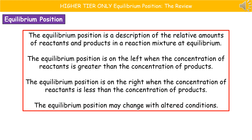For those of you doing the higher tier, you need to know about equilibrium position. The equilibrium position is a description of the relative amounts of reactants and products in a reaction mixture at equilibrium. The equilibrium position is on the left when the concentration of reactants is greater than the concentration of products. And the equilibrium position is on the right when the concentration of reactants is less than the concentration of products. Just remember that the equilibrium position may change if we alter the conditions.